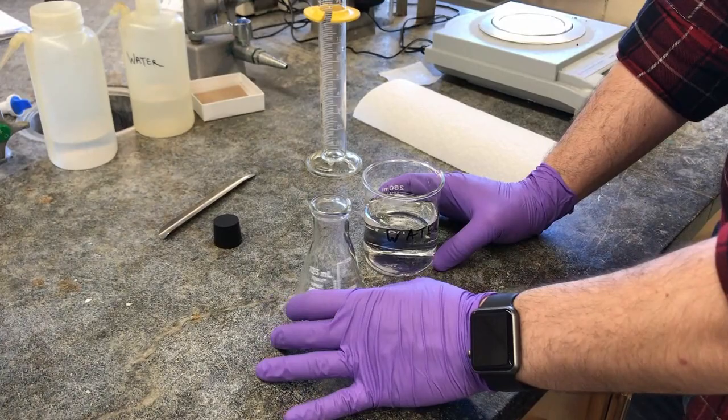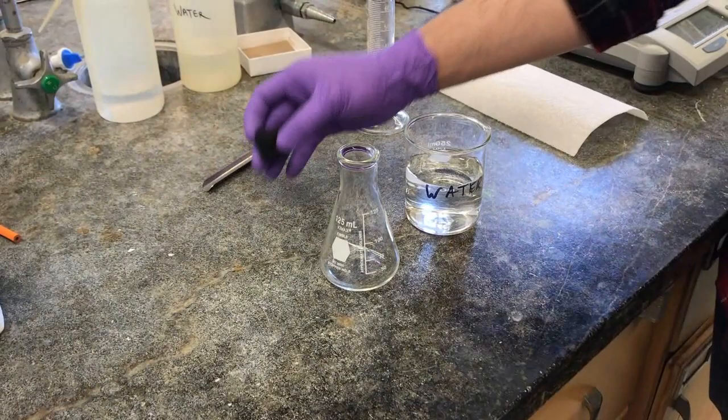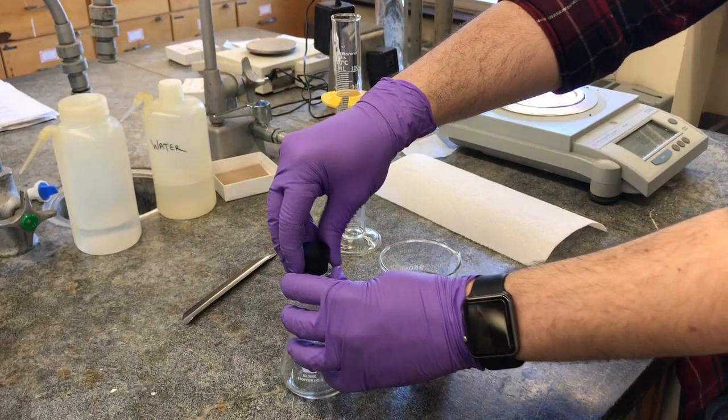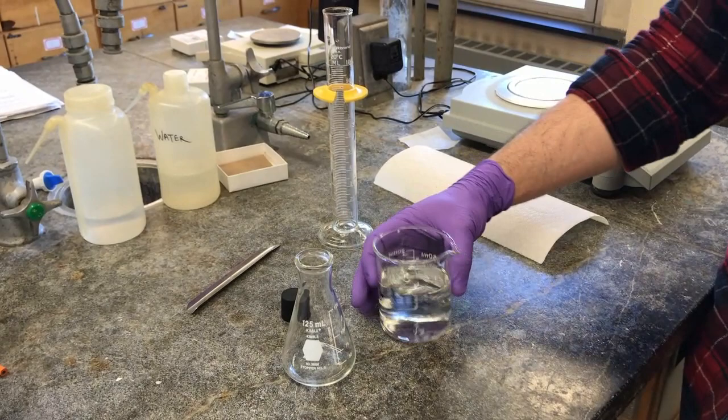So now we need to find the volume of this Erlenmeyer flask. On the side, it says that it's a 125 milliliter flask up to about this line, but we actually need to find the volume of this entire flask up to the stopper where the air was. We need to find the volume of air. The way we can do that is we can fill this up to the brim with water, and then measure the volume via the graduated cylinder.